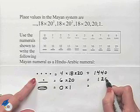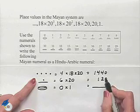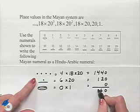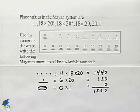0 times 1 is 0. Now we're going to add these together to give us our Hindu-Arabic numeral, which would be 1560.